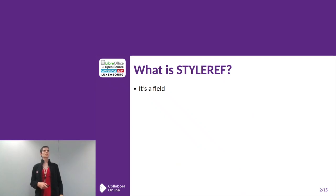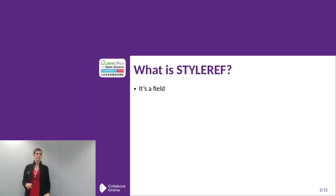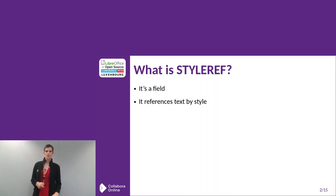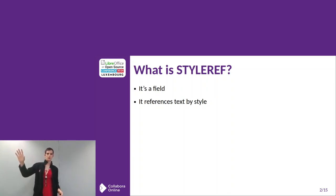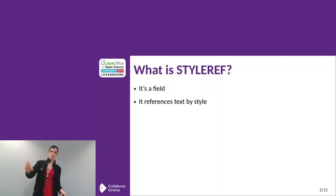StarRef is a field that I implemented around about a year ago. It references text by style. So you can have a StarRef field that says I want to find a heading 1 on the current page, or I want to find the nearest pre-formatted text.